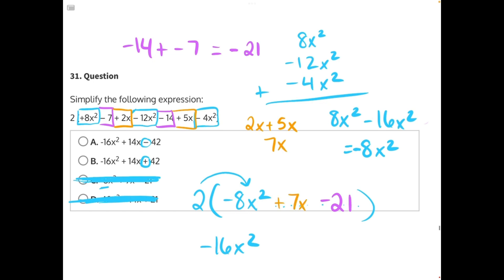And now we can do the distributive property. We already did the first step of distributive property. The second step, 2 times 7, would give us positive 14x. And then 2 times negative 21 would give us negative 42. Again, matching answer choice A.